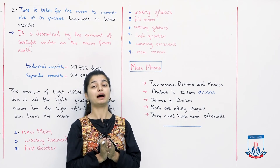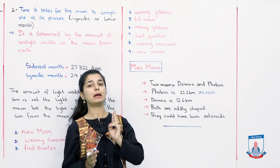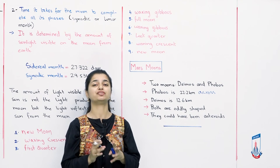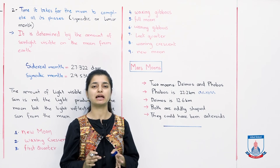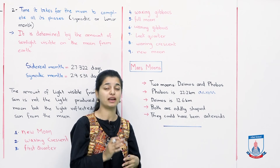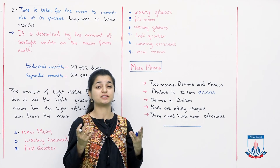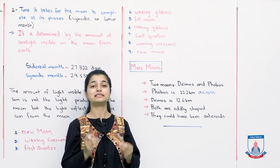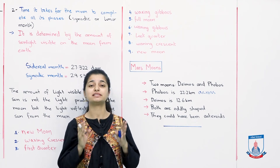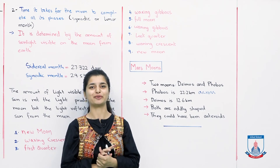So that's it. Haamne abhi baat kar li hai earth ke moon ke baare mein, haamne baat kar li hai Mars ke moon ke baare mein. But that's not it — abhi next lesson se hum sari ki sari baat karenge about all the remaining planets and their moons, and how they act, and what their different types and characteristics are. Until then, aap isko revise karo, understand karo, and stay tuned for the further lessons. Allah Hafiz, take care.